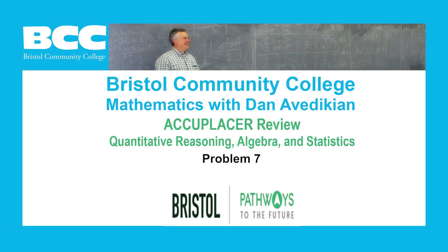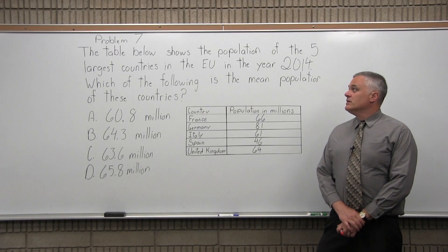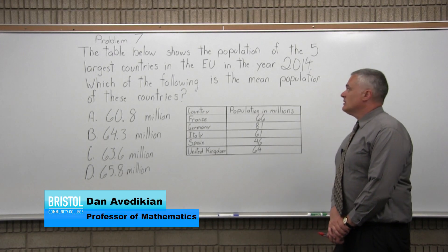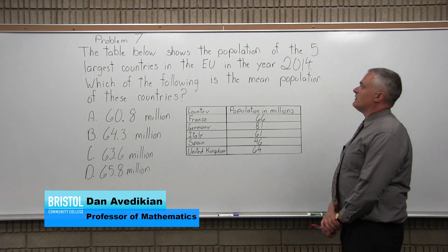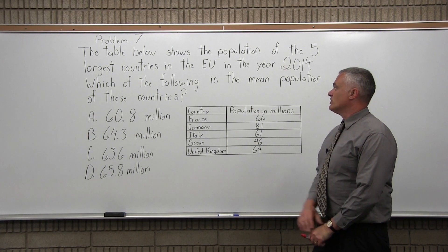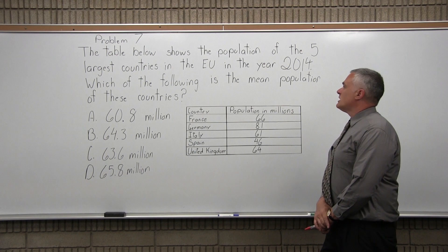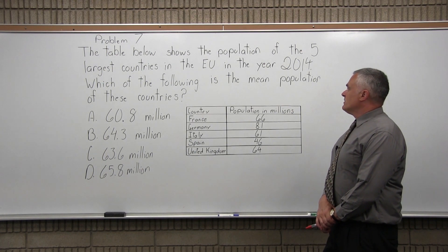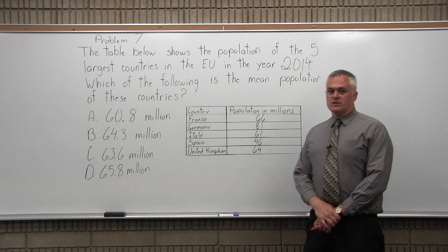Problem 7. The table below shows the population of the five largest countries in the EU, or European Union, in the year 2014. Which of the following is the mean population of these countries?